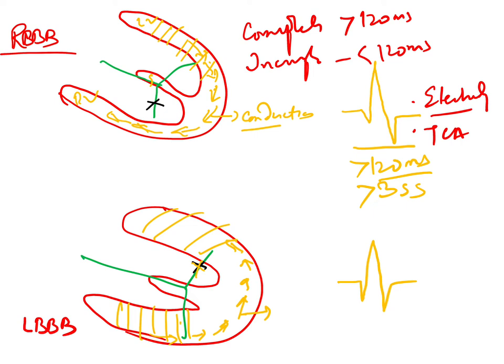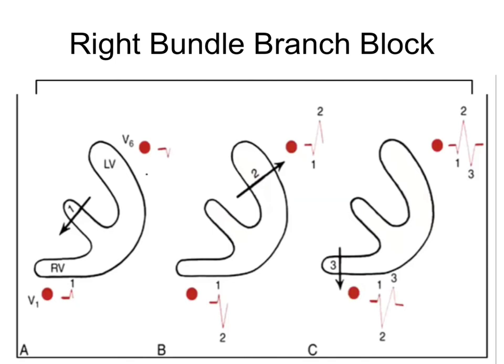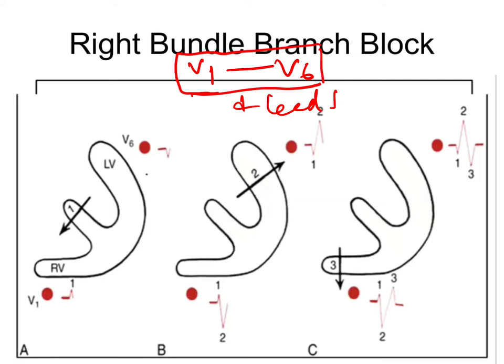The next step is to look at the morphology of the QRS complexes and determine where the block is — whether it is in the right bundle branch or the left bundle branch. To diagnose bundle branch blocks, we look at two leads: V1 and V6. Most clinicians use V1 and V6 as tools for diagnosis. We can also use Lead 1. These three leads help us diagnose whether it is a right or left bundle branch block.